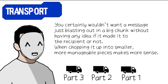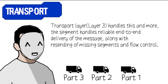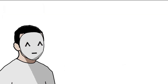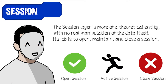The transport layer: you certainly wouldn't want a message just blasting out in a big chunk without any idea if it made it to the recipient. Chopping it up into smaller, more reliable, more manageable pieces makes more sense. The transport layer, layer 4, handles this and more — the segment handles reliable end-to-end delivery of the message, along with the resending of missing segments and flow control.